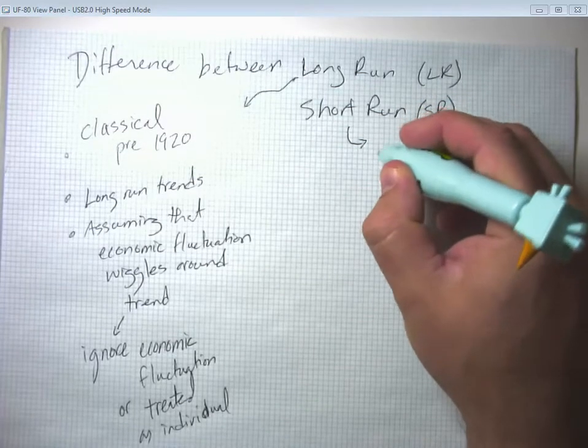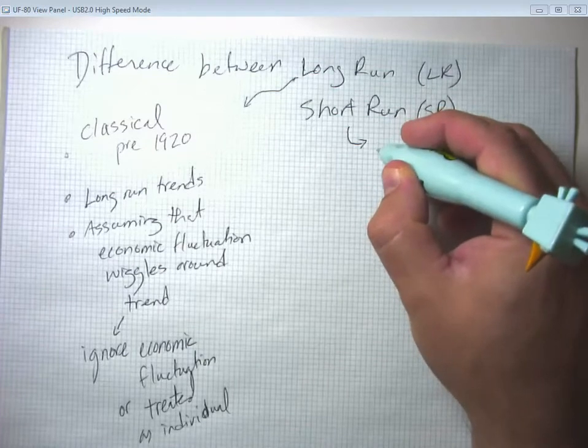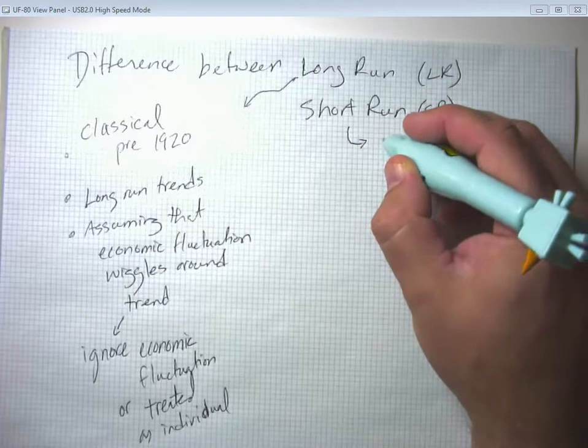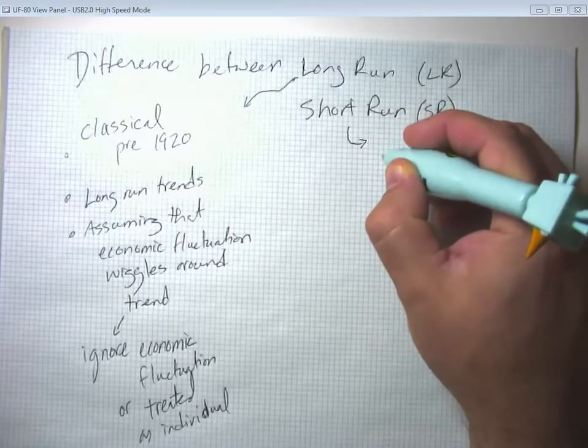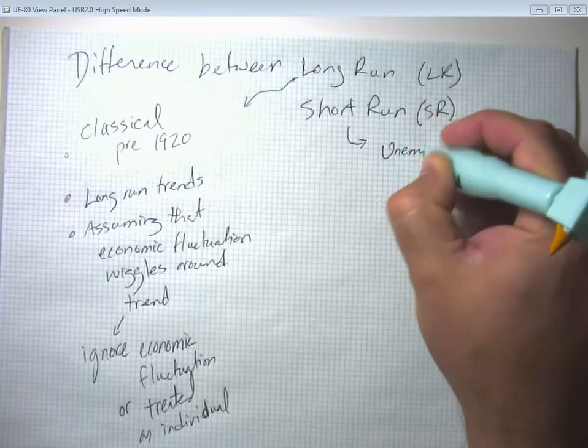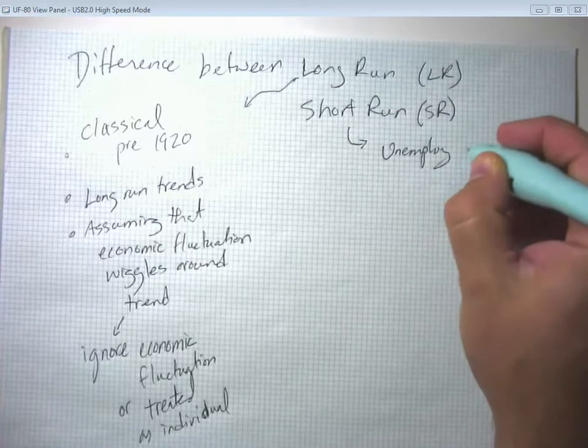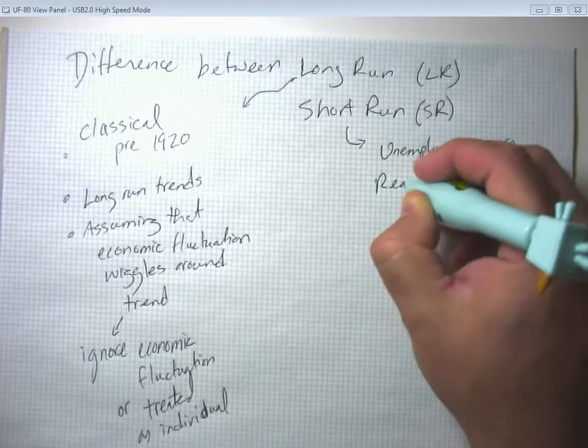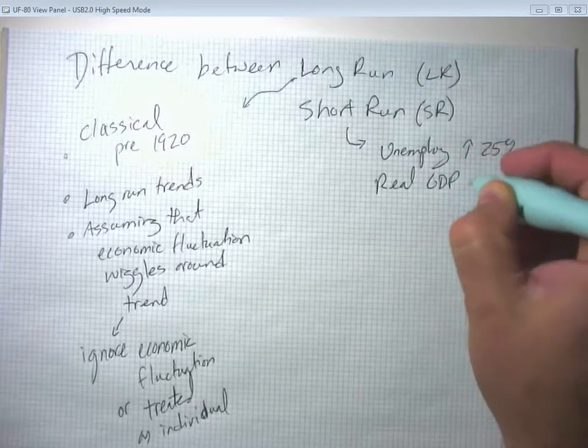And finally, beginning in the Great Depression, of course, we enter a very deep recession where unemployment in the U.S. gets up to about 25%.